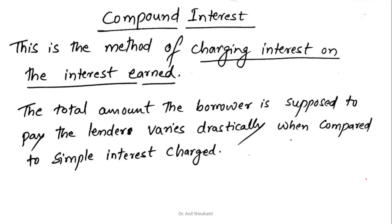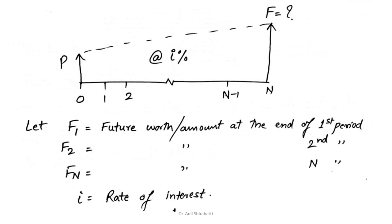Now, what about compound interest? In compound interest, this is the method of charging interest on the interest earned. The total amount the borrower is supposed to pay the lender varies drastically when compared to the simple interest charged. Let's look at the equations used in this case.